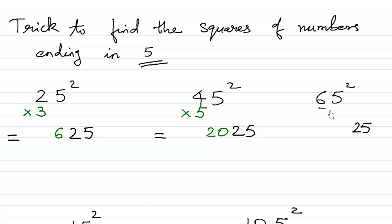What comes after 6? 7 comes after 6. And what is 6 times 7? 6 times 7 is 42. So 4225.